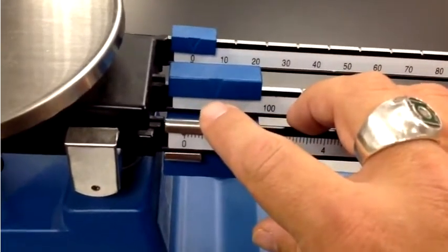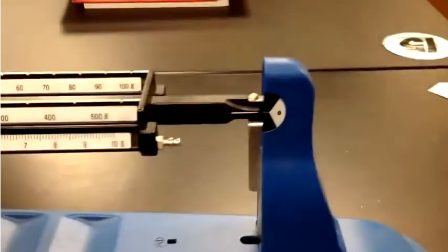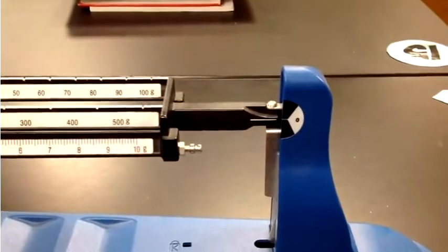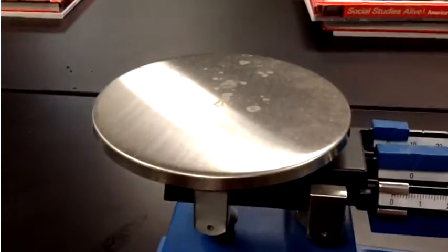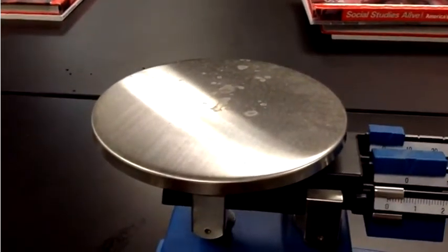Okay, all right. So as you can see I've got this triple beam balance zeroed out. So now we're going to place our object that we're going to measure, that's mass, up on this plate.